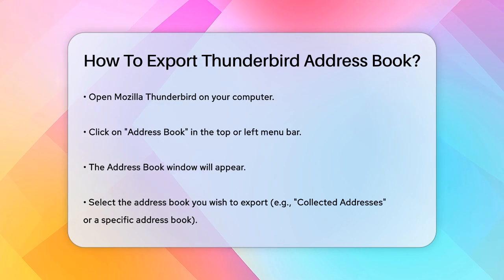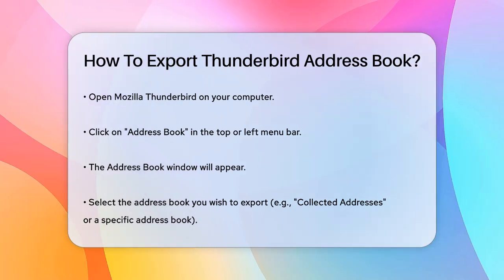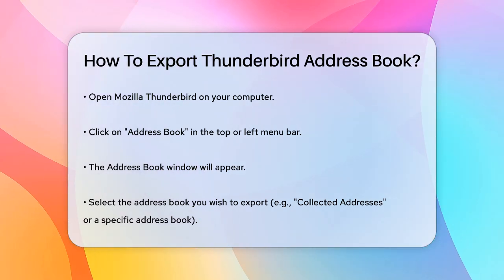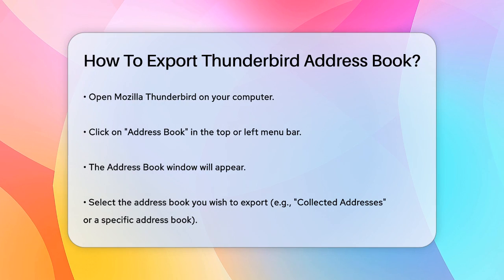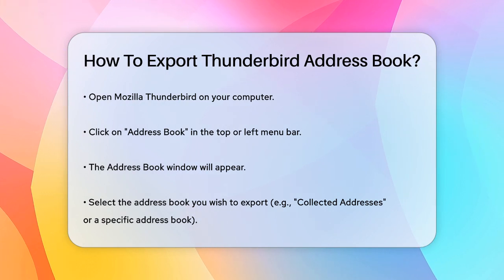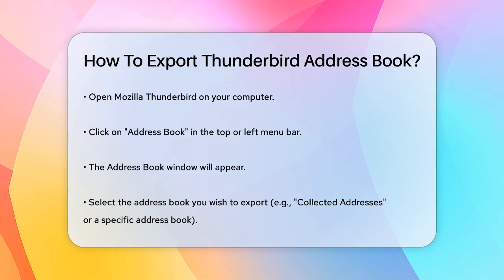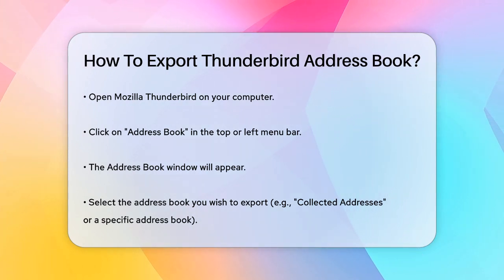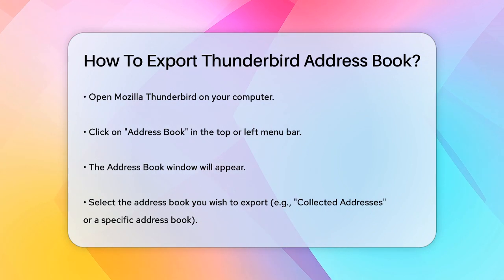First, open Mozilla Thunderbird on your computer. Once it's open, click on the Address Book item in the top menu bar or the Address Book button in the left menu bar. This will open the Address Book window.